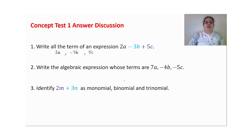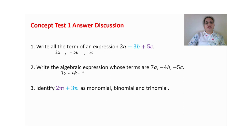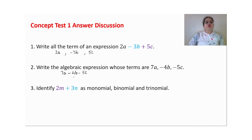Write an algebraic expression whose terms are given. Here is the algebraic expression — you have to write the terms. Remember, terms are always written with their sign. So: 7a minus 4b minus 5c. Write commas between terms, then combine them as an algebraic expression using mathematical operations.